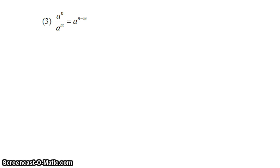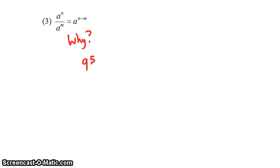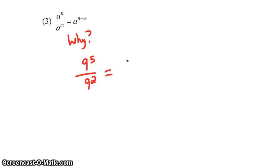The next rule says that a to the n over a to the m is equal to a to the n minus m. If we take 9 to the fifth over 9 squared, according to the rule, the answer should be 9 cubed — 9 to the 5 minus 2.